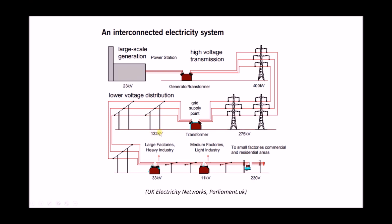132 kilovolts is still too high for delivering electricity to factories and residential premises, so we need to step that voltage down further. Typically the voltages supplied to large factories and heavy industry is 33 kilovolts. For medium factories and light industry we have voltages of around 11 kilovolts, and for residential properties we step that down again to 230 volts. So the standard mains supply in domestic properties is 230 volts, 11 kilovolts for small factories, and 33 kilovolts for large factories. That gives us our full network: generation, transmission, distribution, and supply.